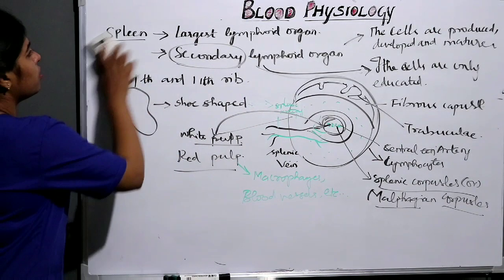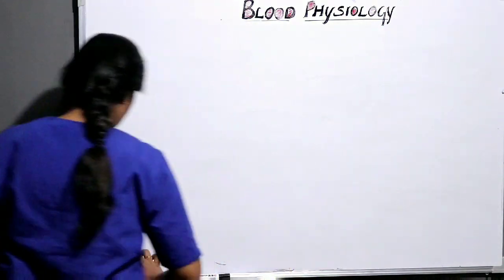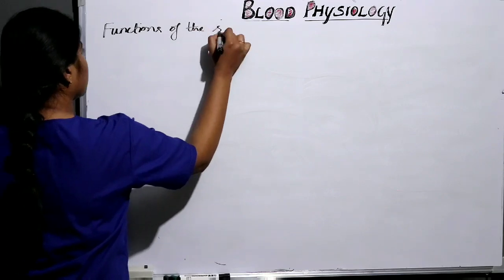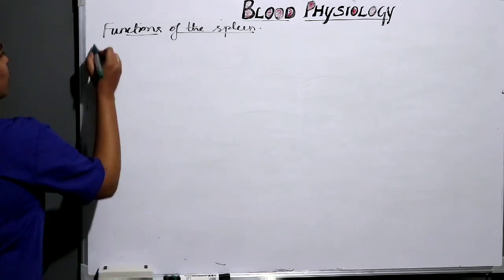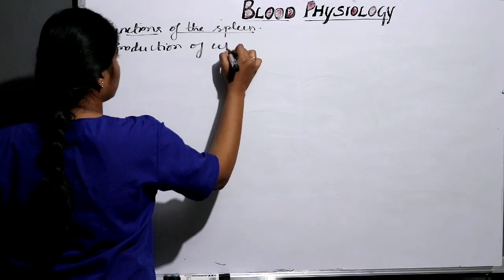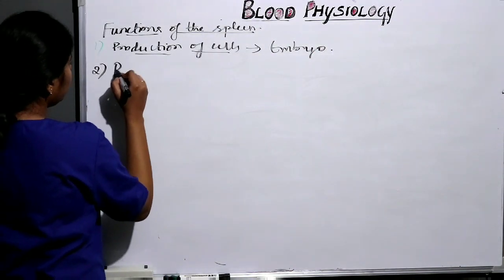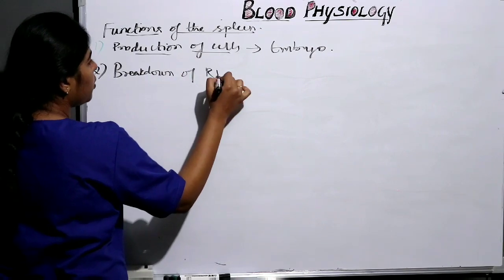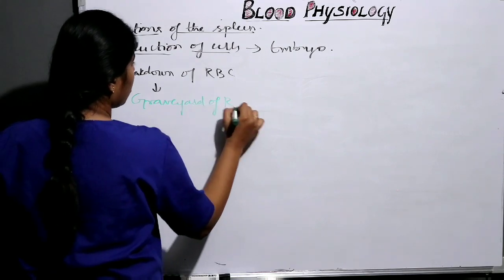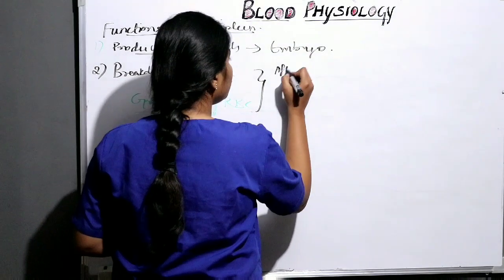Now let's discuss the functions of the spleen. The spleen helps in the production of blood cells. It also acts as the breakdown center of RBCs, and is known as the graveyard of red blood cells. The lifespan of red blood cells is 120 days, after which the cell membrane becomes fragile.